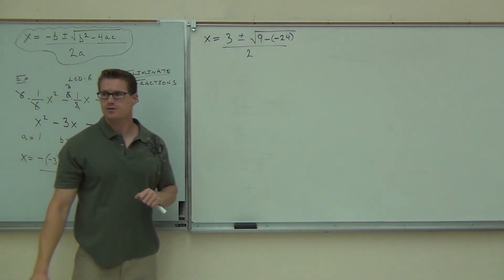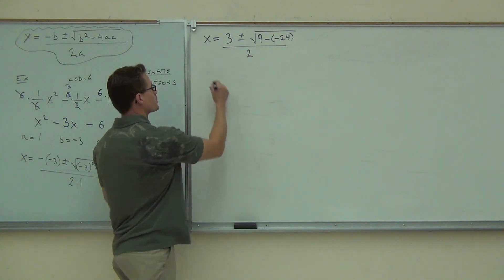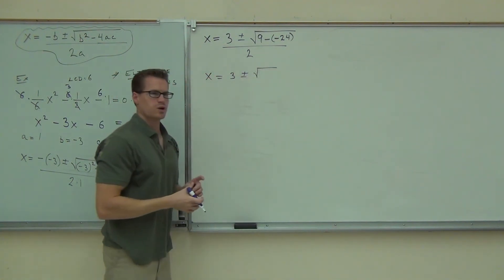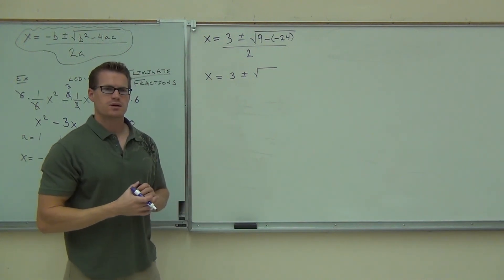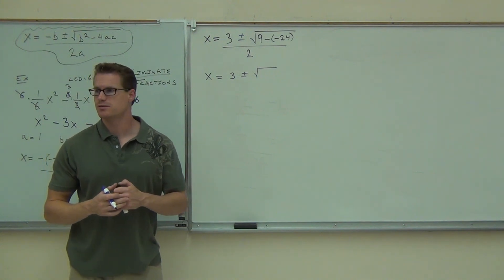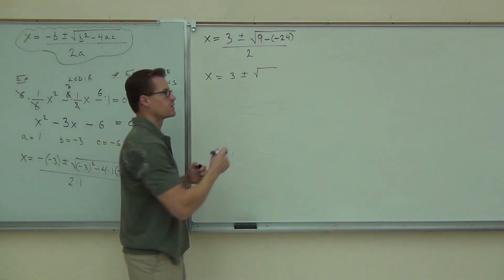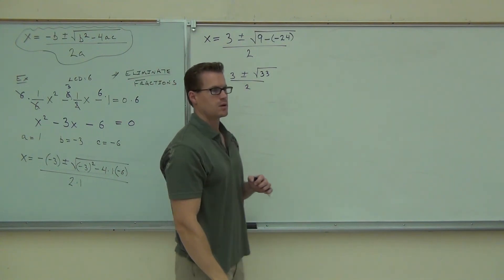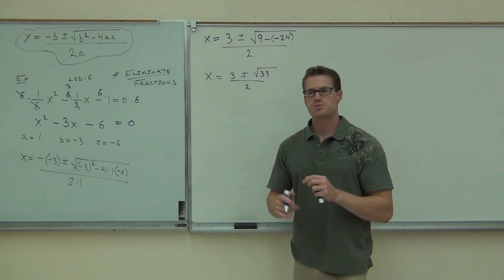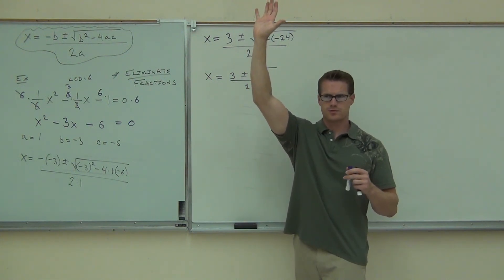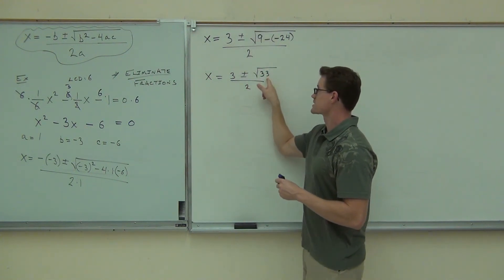You still okay so far? Okay. So, we're going to have x equals 3 plus or minus the square root. What's inside my square root at this point? Am I subtracting? Should I have a negative or should I have a positive? Positive. How much? 33. Over two. Now, at this point, firstly, how many of you feel okay getting down to that far? Good for you. All right. At this point, you try to simplify that. Can you simplify that? No.